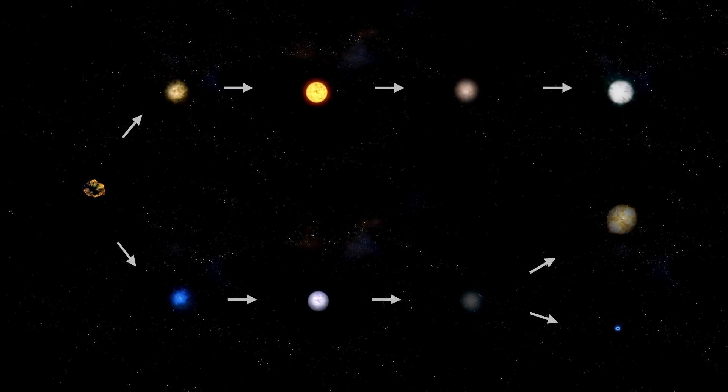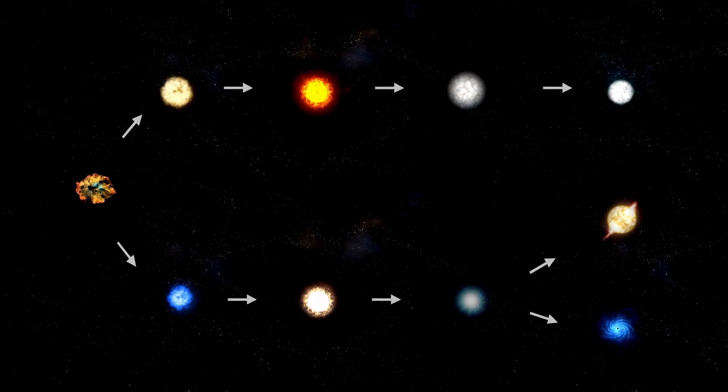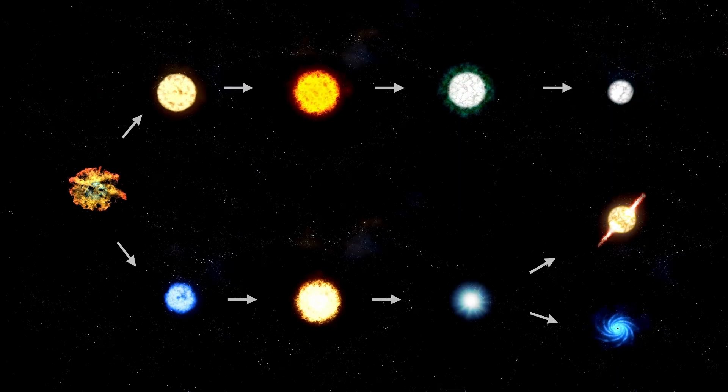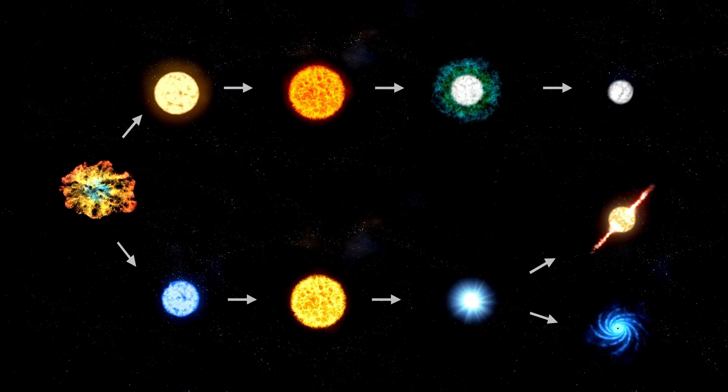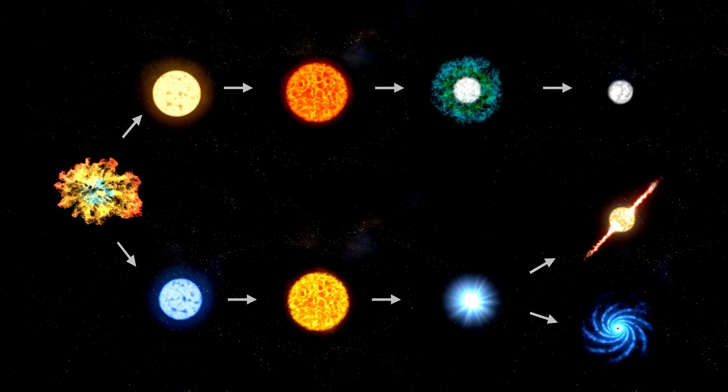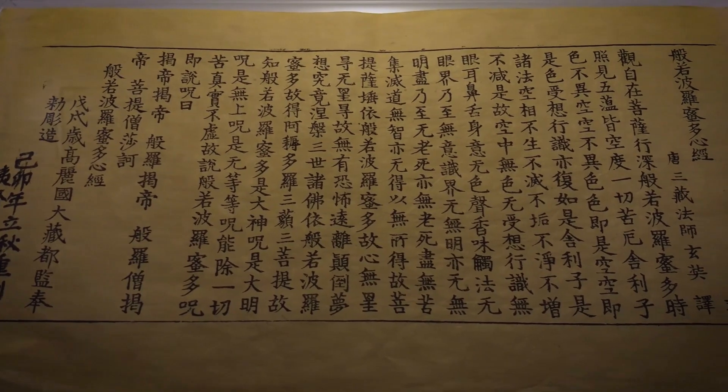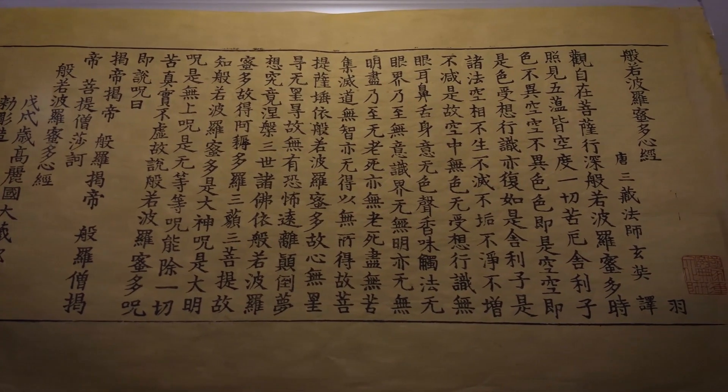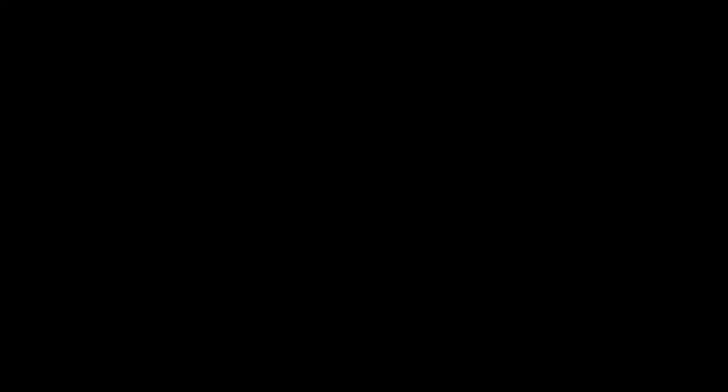Our story begins with three distant galaxies, faint specks suspended in the darkness captured by Webb's powerful infrared sensors. At first glance, they seemed like many others. But these galaxies were different. They were massive, compact, and far too evolved for their age. This suggested that something entirely unfamiliar might be fueling them.